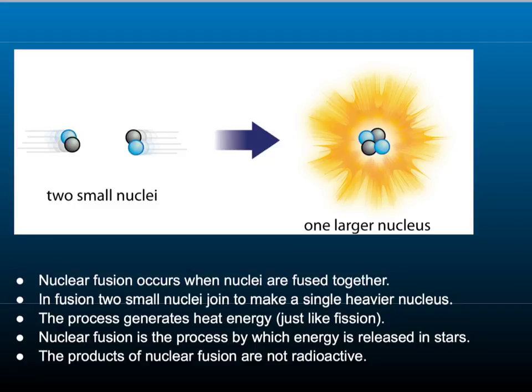Nuclear fusion is the process by which energy is released in stars. If we could do this on Earth, it would be even more important to us, because the products of nuclear fusion are not radioactive. So unlike with nuclear fission, we wouldn't have a problem with radioactive waste.